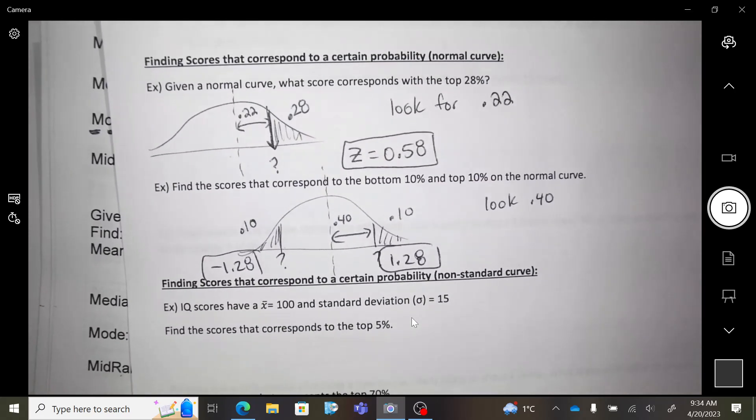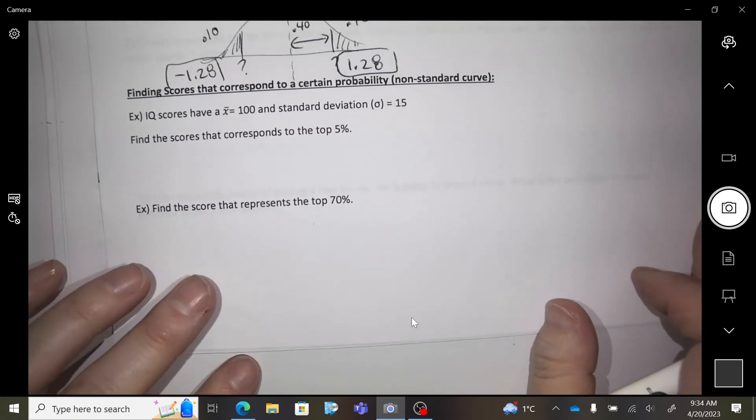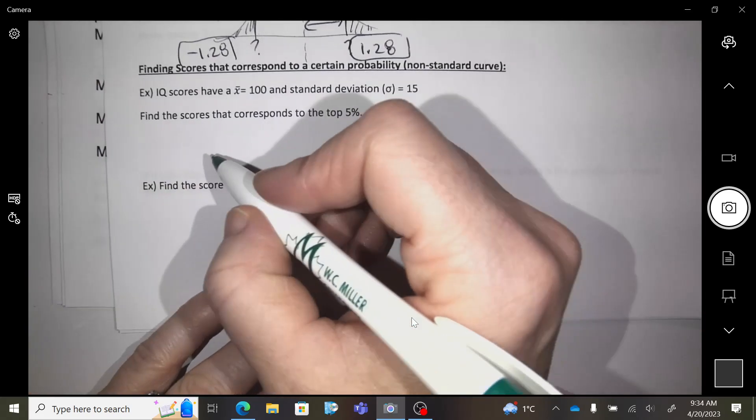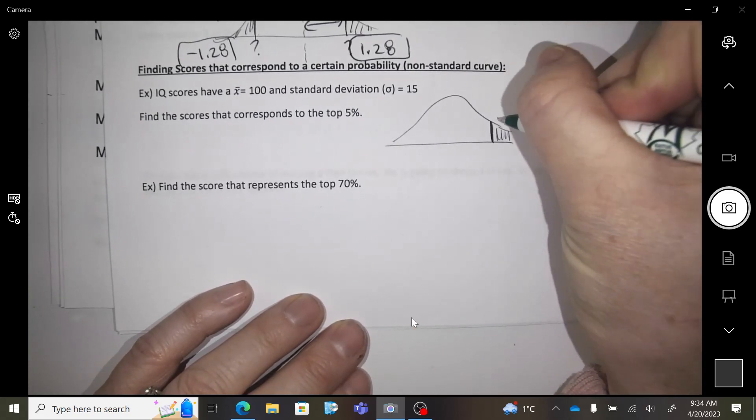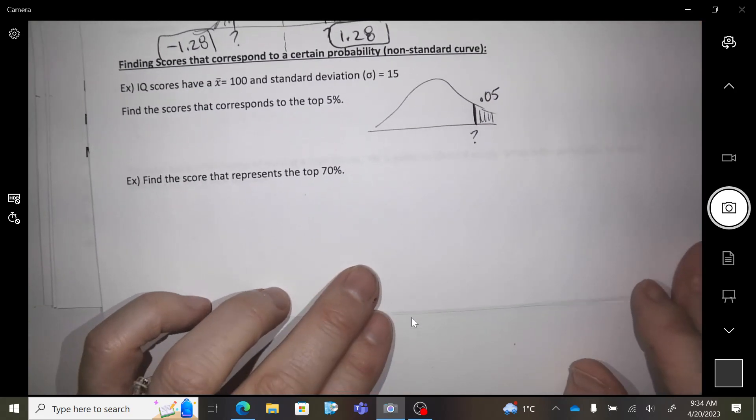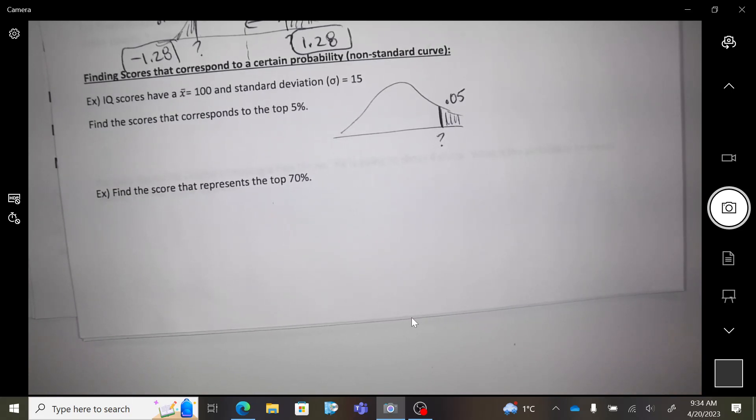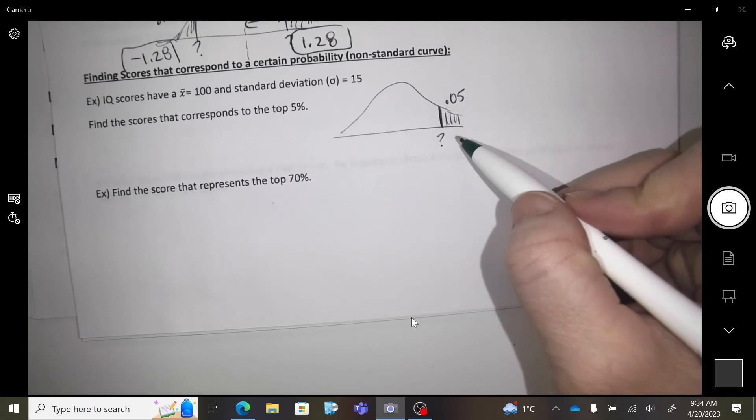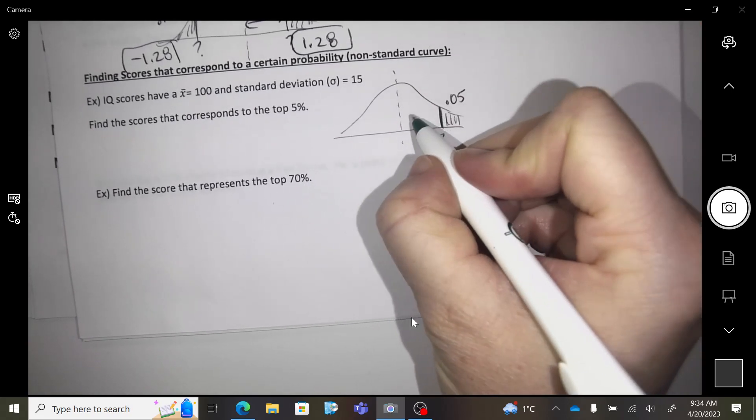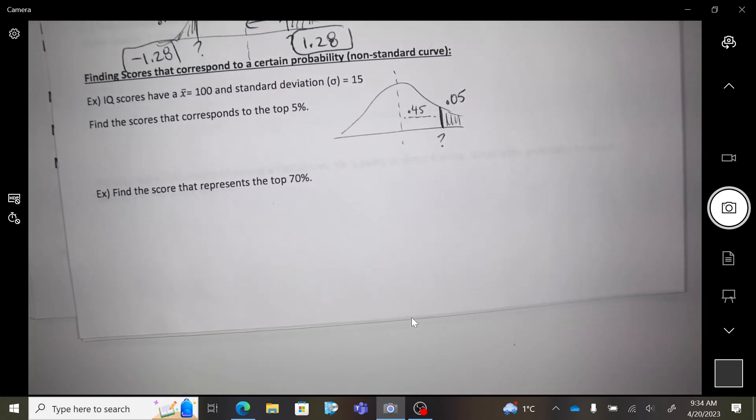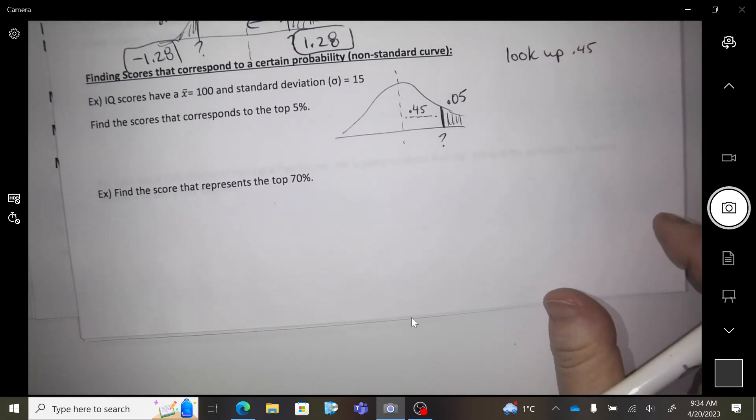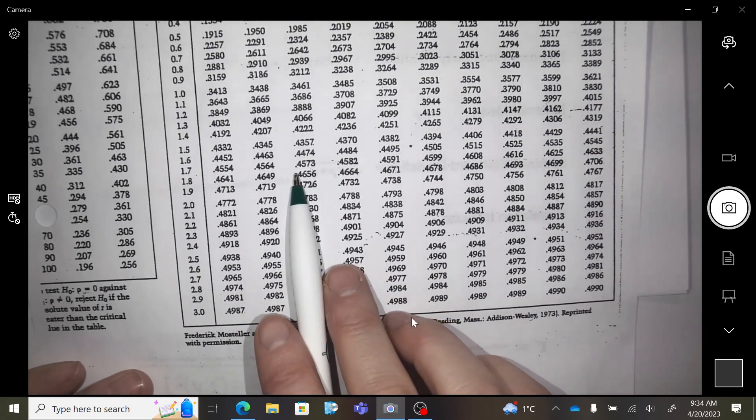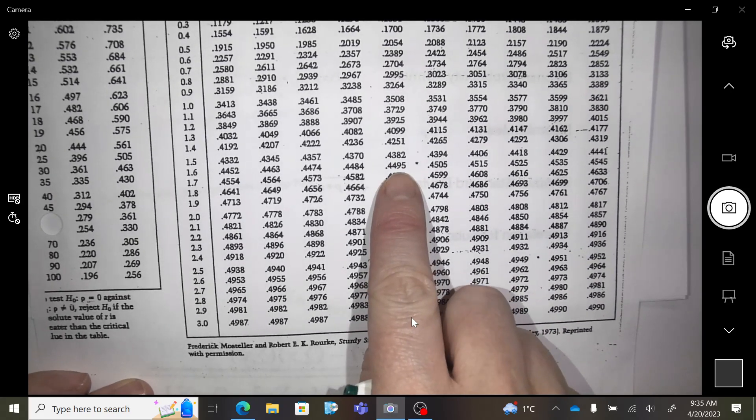Okay, we're going to add that last step together. Find the score that corresponds to the top 5% of our IQ tests. So we want to be there. What is the top 5%? So there's actually going to be 45% of the data between me and the middle. So I'm going to look up a 0.45, as close to 0.45 as I can get.